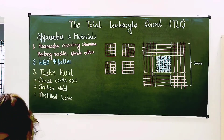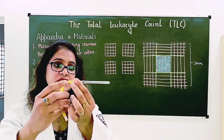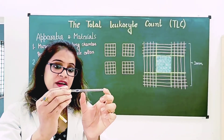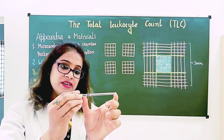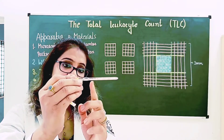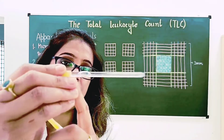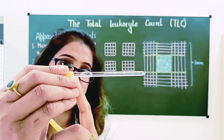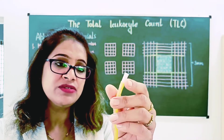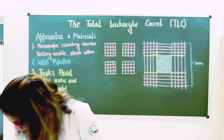This is the WBC pipette. In the WBC pipette, there are markings at 0.5, at 1, and at 11. So three markings are there — at 0.5, at 1, and after the bulb there is one more marking at 11. The mouthpiece is white in the case of the WBC pipette.